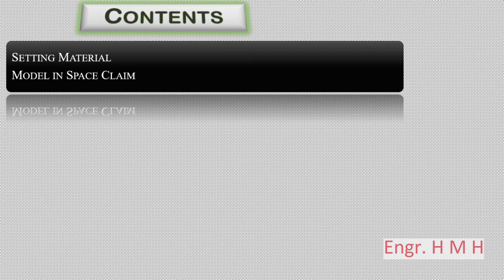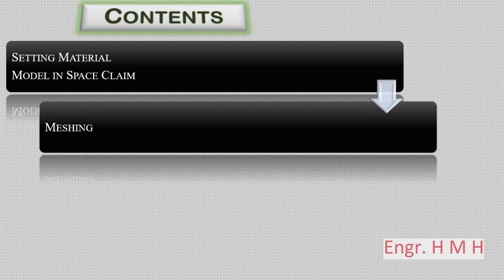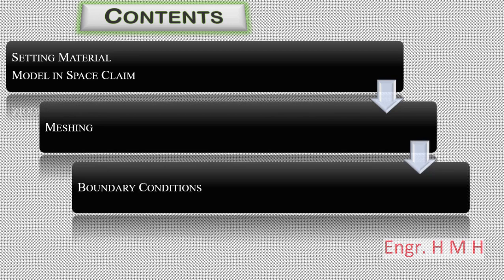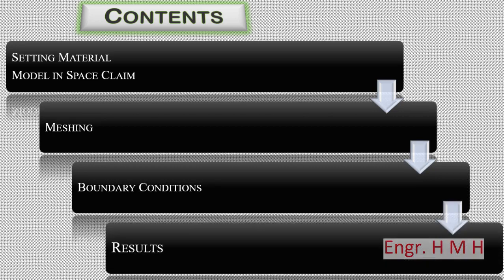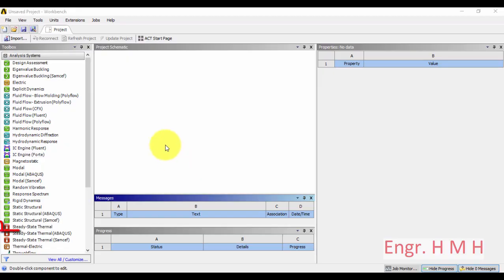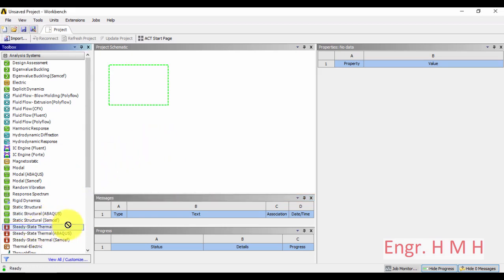The contents of today's tutorial are: first, we will set up the fin material; then we will design a model in SpaceClaim; the second step is meshing of the fin; the third is boundary conditions; and the fourth is the results. So let's drag over the steady-state thermal module.